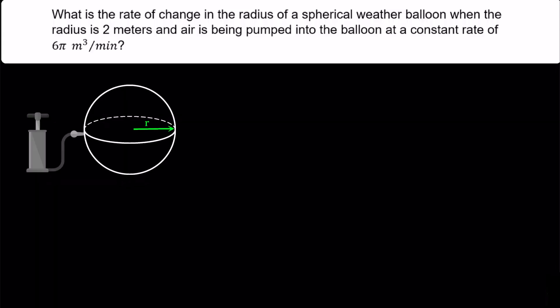Here we have a balloon. If you pump air into the balloon at a rate of 6π m³ per minute using a pump, the balloon will expand. Let's find out how fast the radius of the balloon is increasing over time, when the radius of the balloon is 2 meters.